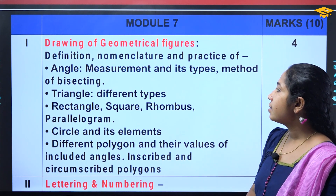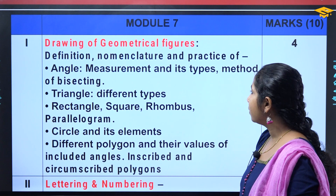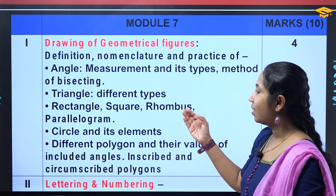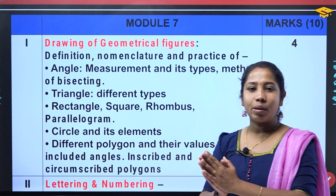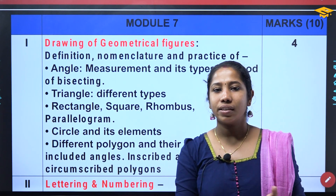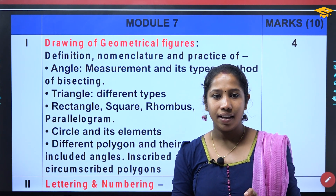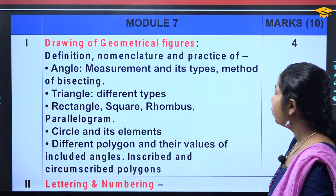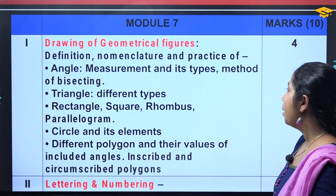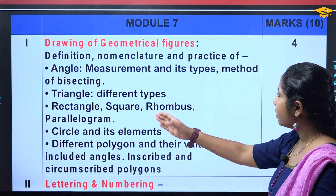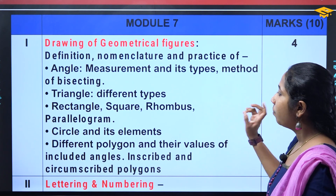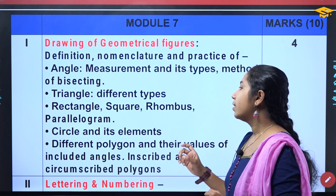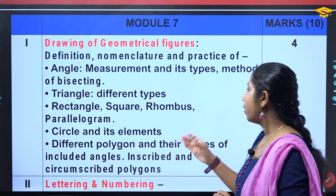Drawing of geometrical figures: definition, nomenclature and practice of angle. Angles and types. Triangle. Rectangle. This is a very important part. Definition, nomenclature and practice of angle. Measurement and its types. Angles and types. Method of bisecting. Triangle and different types. Rectangle, square.